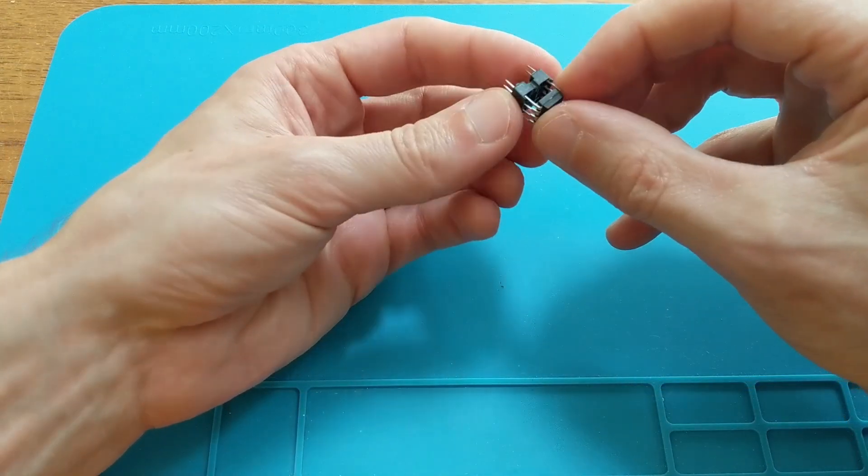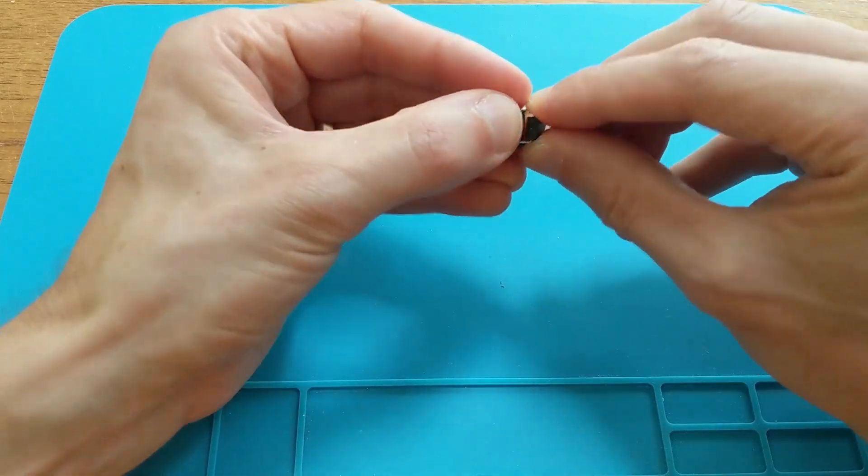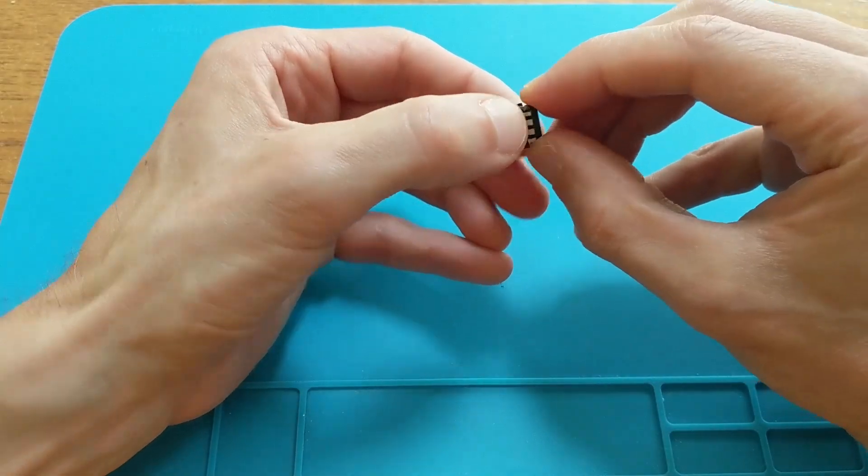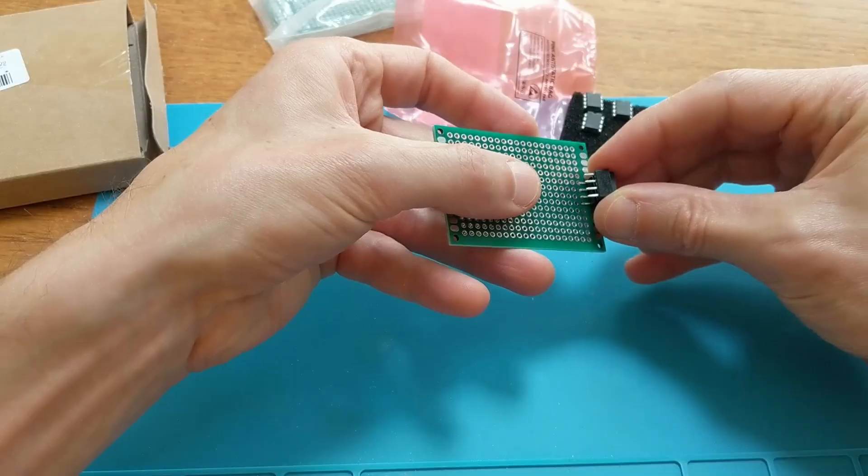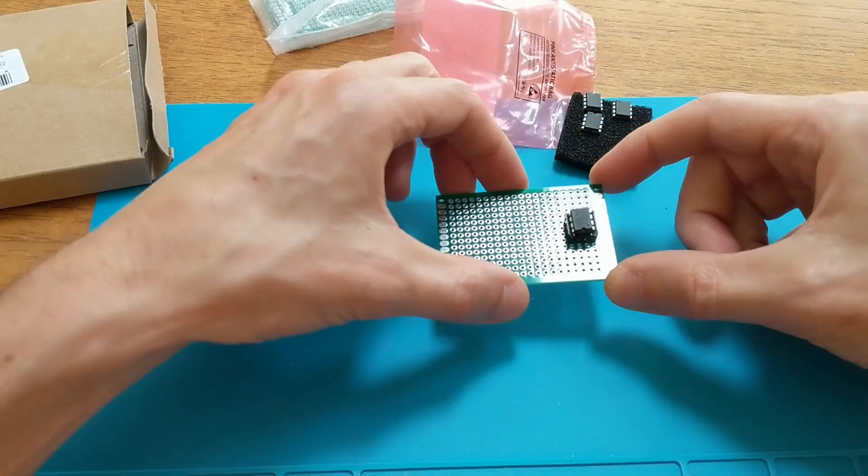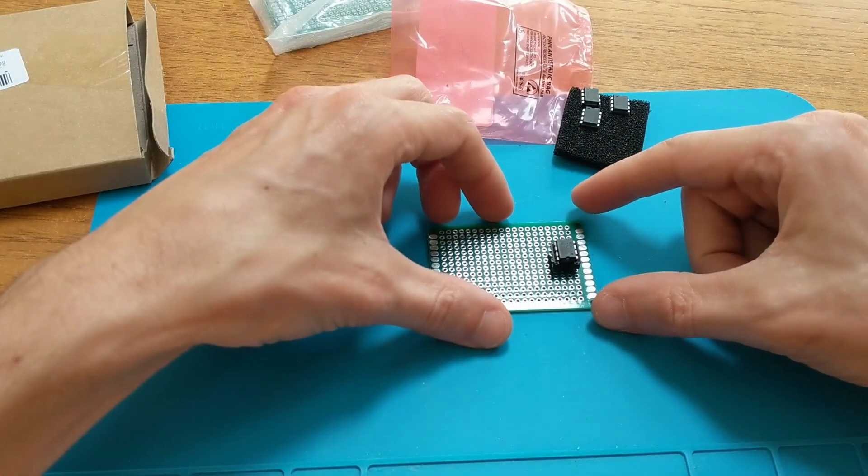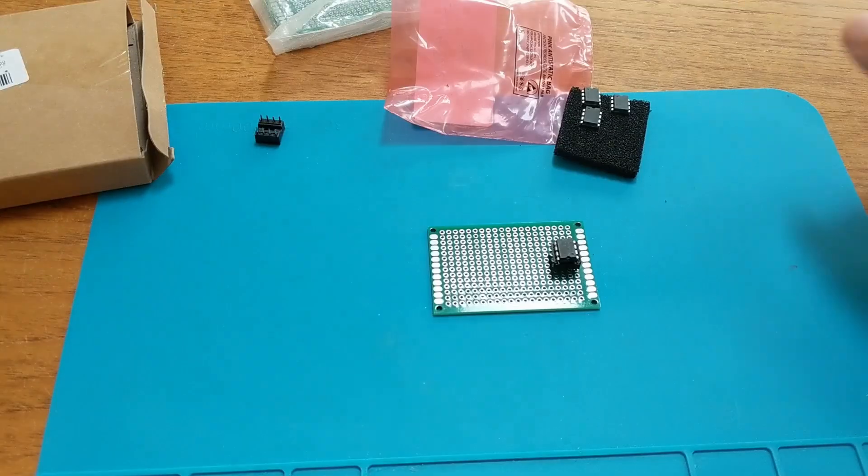Because I haven't yet finished the programming side of things for the ATtiny, I decided to use the DIP packaged version with a separate DIP-8 socket on the perfboard. It means I can easily remove the ATtiny to reprogram it, and the pins all line up with the holes on the perfboard.